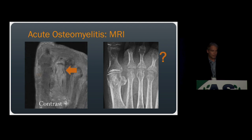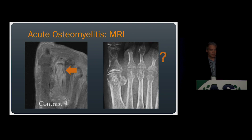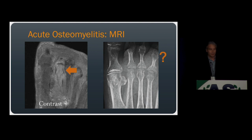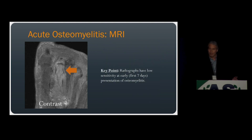This is where MRI can be very useful. On post-contrast imaging of the same patient, we see exuberant enhancement in the second metatarsal head, consistent with osteomyelitis. This brings the first key point: radiographs have very low sensitivity for diagnosing osteomyelitis at early presentation.